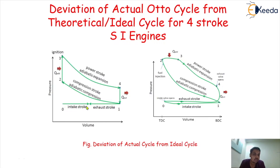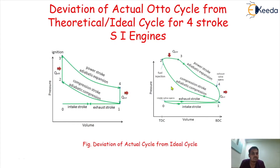In the actual cycle, at 0 to 1 we never get a straight line — there will be some curvature. Then 1 to 2, 2 to 3, 3 to 4, 4 to 5, and 1 to 0 — every curve is different in the actual cycle compared to the theoretical.